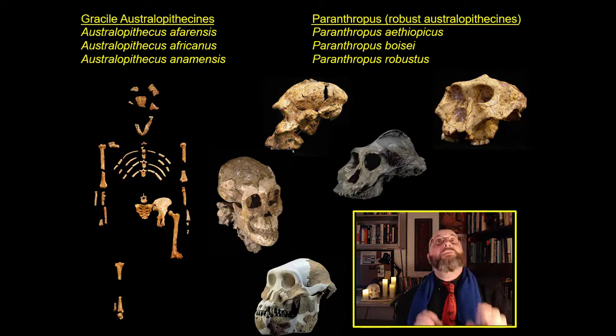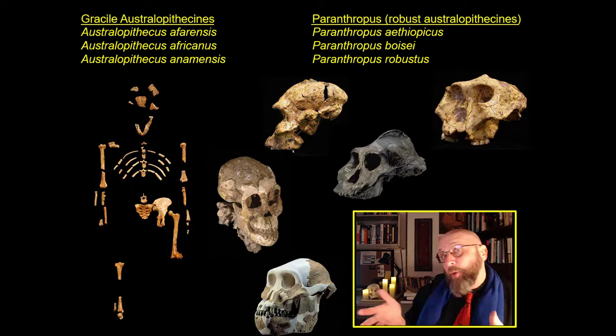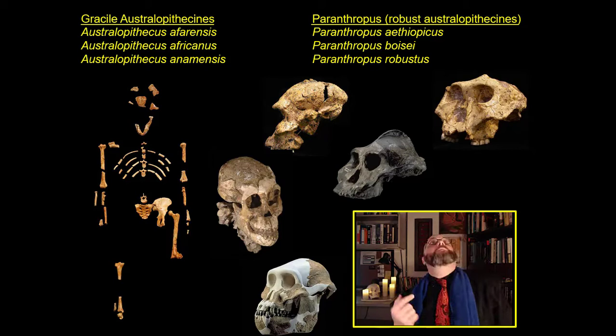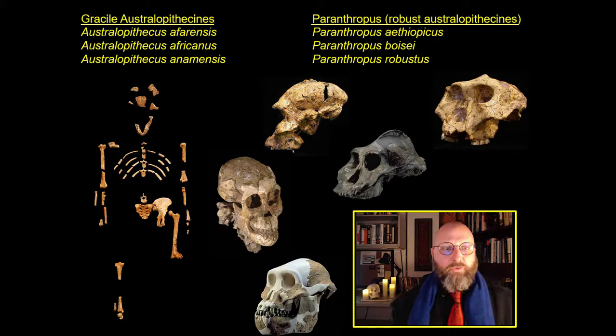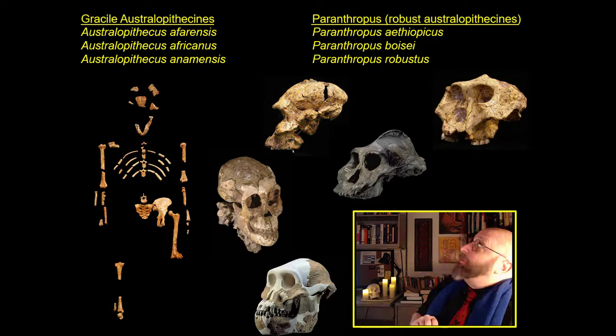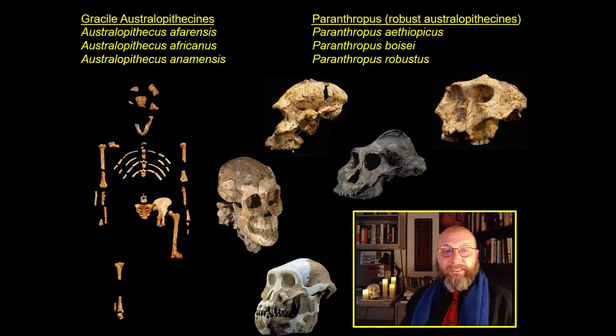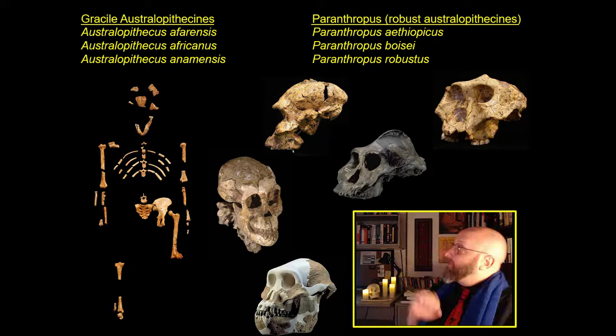You can group the australopith species into two categories: the gracile australopiths and the robust australopiths, also called the paranthropus species — paranthropus aethiopicus, paranthropus boisei, and paranthropus robustus. These have the really big skulls with large sagittal crests and heavy jaws. Then you've got their smaller, daintier cousins, the gracile australopithecines — australopithecus afarensis, australopithecus africanus, and australopithecus anamensis. These are the most famous ones.